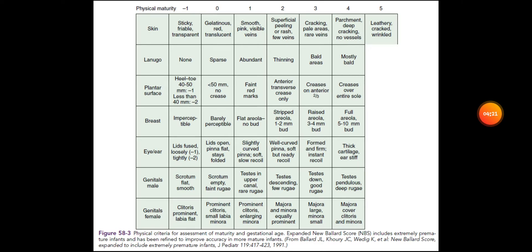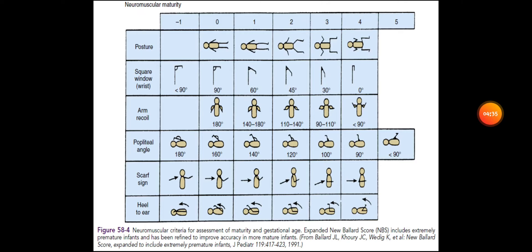This completes the physical criteria for the expanded new Ballard score, which includes extremely premature infants and has been refined to improve accuracy in more mature infants. We now go to the neuromuscular maturity section. The Ballard score is divided into physical and neuromuscular parameters. The neuromuscular section has six parameters, with scores ranging from negative one to five for popliteal angle.